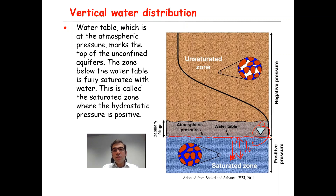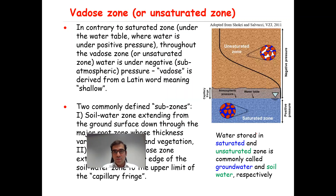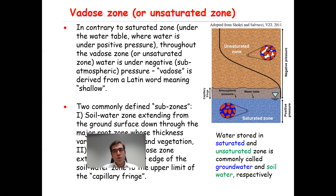The region above the water table is under negative pressure, or sub-atmospheric pressure, and that region is called the unsaturated zone or vadose zone.